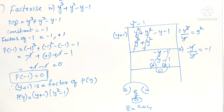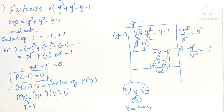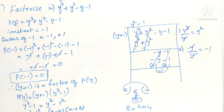Now we have to find the factors of y² - 1. This is in the form a² - b², and the formula is a² - b² = (a - b)(a + b). Similarly, y² - 1² = (y - 1)(y + 1). So the factors of y² - 1 are (y - 1)(y + 1).